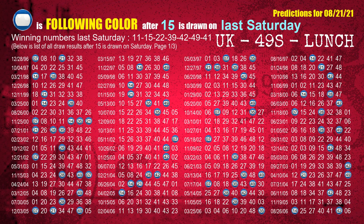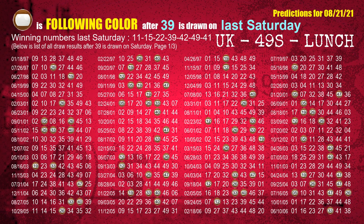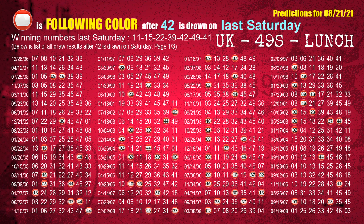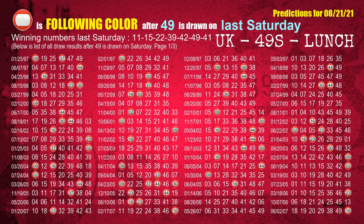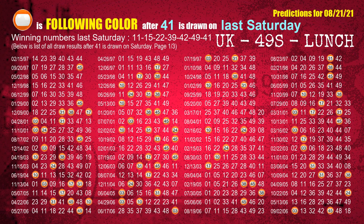The second winning number last Saturday is 15 — the most frequently following color is blue when 15 is the winning number on last Saturday. The third winning number last Saturday is 22 — the most frequently following color is purple when 22 is the winning number on last Saturday. The fourth winning number last Saturday is 39 — the most frequently following color is brown when 39 is the winning number on last Saturday. The booster winning number last Saturday is 41 — the most frequently following color is orange when 41 is the winning number on last Saturday.